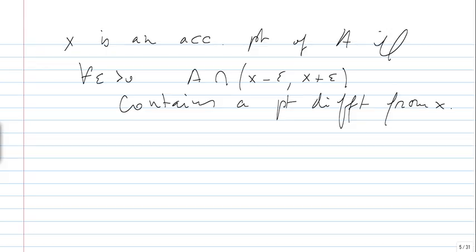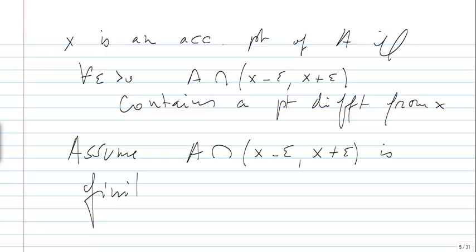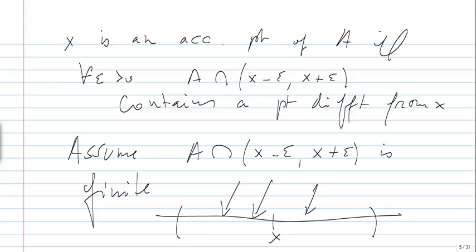To show the equivalence, assume that A intersects (x − ε, x + ε) is finite. So we have x and finitely many points of A, with at least one different from x. What we do is consider the closest such point and take that neighborhood. In that neighborhood, we are not going to find anything different from x — giving us a contradiction.